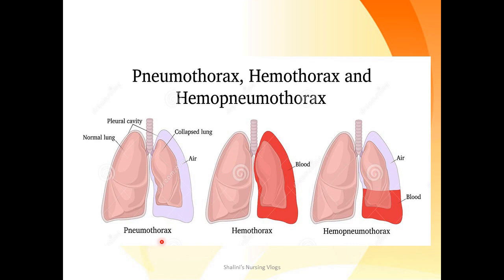In the first picture, this is the pleural cavity which is filled with air, and hence it is called pneumothorax. In the second picture, the pleural cavity is filled with blood, and hence it is called hemothorax. Pneumohemothorax is a case in which you have both air and blood filling the pleural cavity.